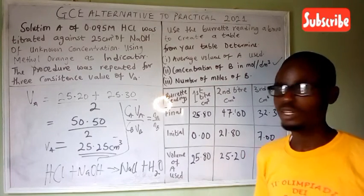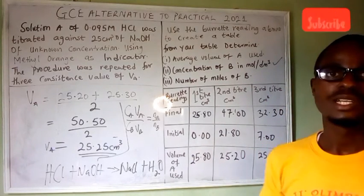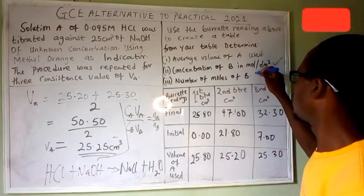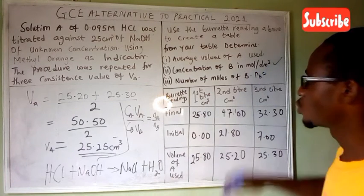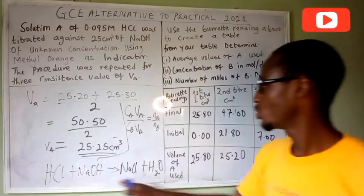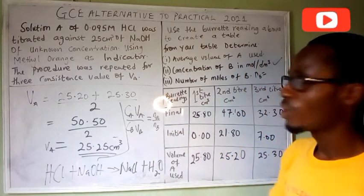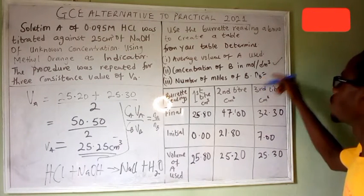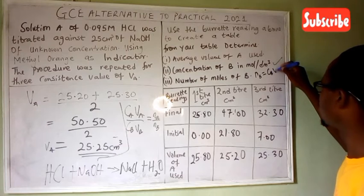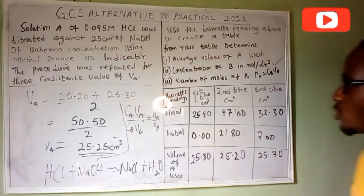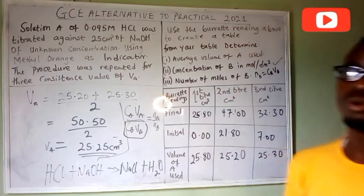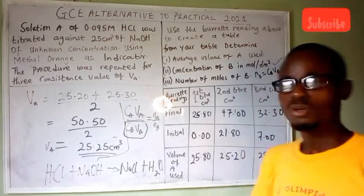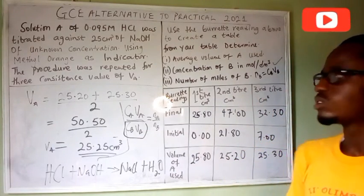For the number of moles of B: number of moles equals concentration times volume. So the number of moles of B equals the concentration of B (Cb) times the volume of B (Vb). You find that immediately after finding Cb. That is all about how to solve the titration portion of the alternative to practical question.